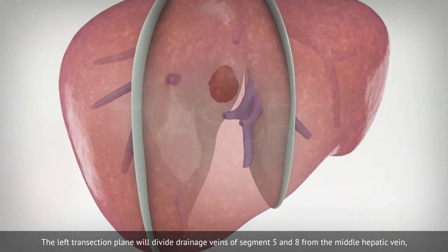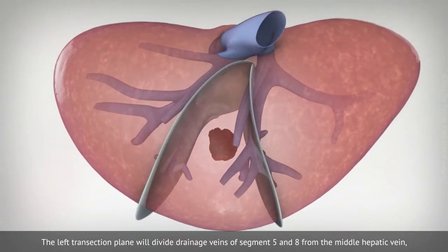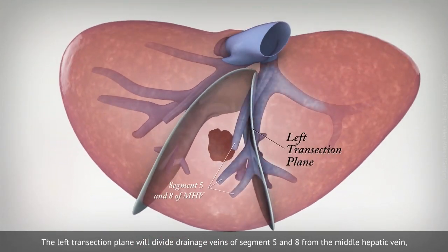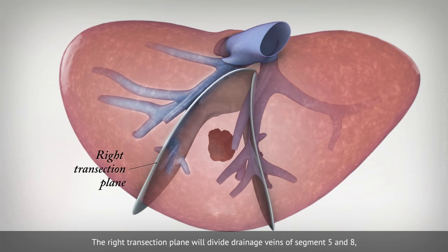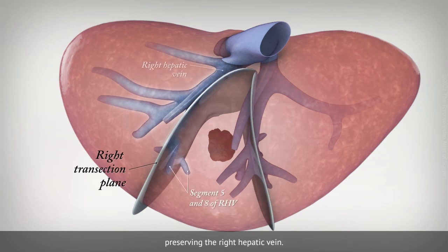The left transection plane will divide drainage veins of segment 5 and 8 from the middle hepatic vein, preserving the middle left hepatic vein. The right transection plane will divide drainage veins of segment 5 and 8, preserving the right hepatic vein.